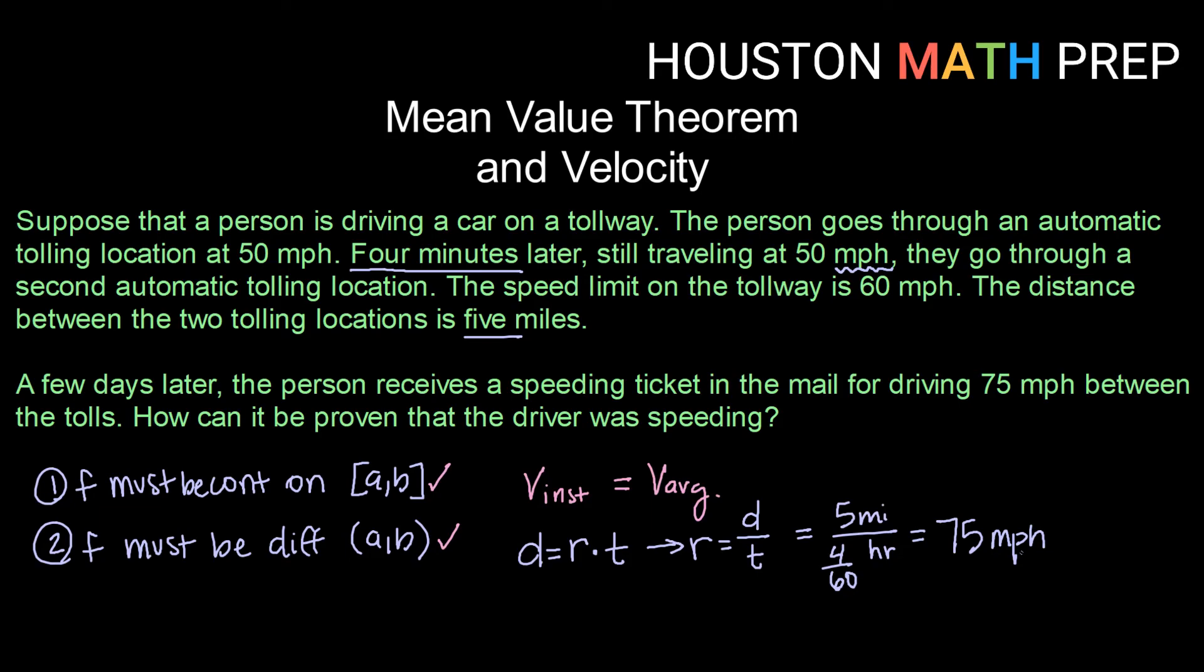So based upon going 50 miles per hour through two tolling locations that are five miles apart in a span of four minutes, the average velocity was 75 miles per hour. And since velocity is continuous and differentiable, there must be at least one place where the instantaneous velocity or the speed at any given moment between toll booth A and toll booth B was equal to the average velocity of 75 miles per hour.